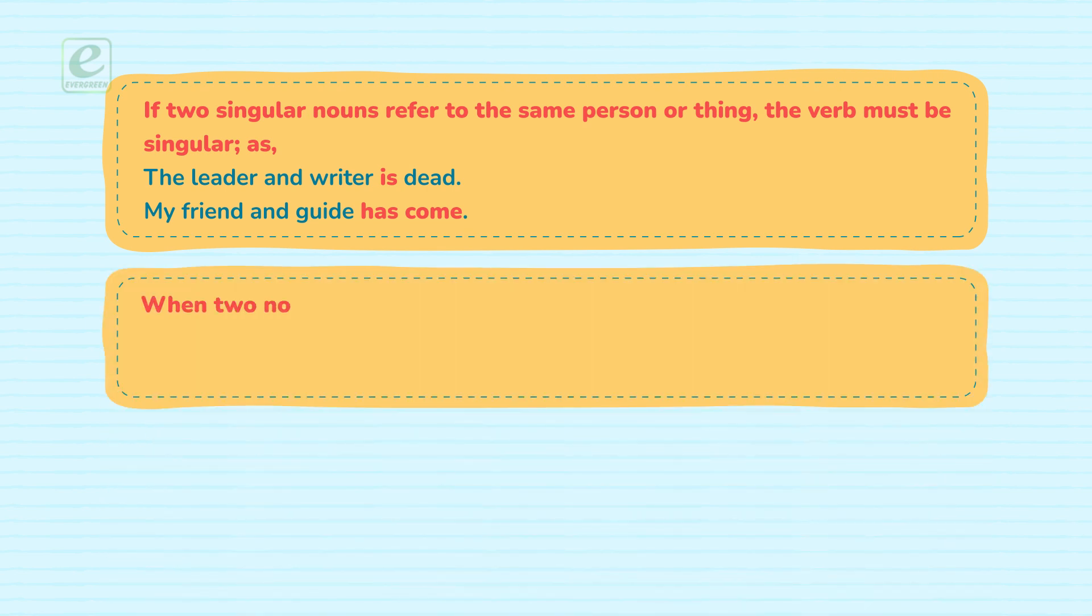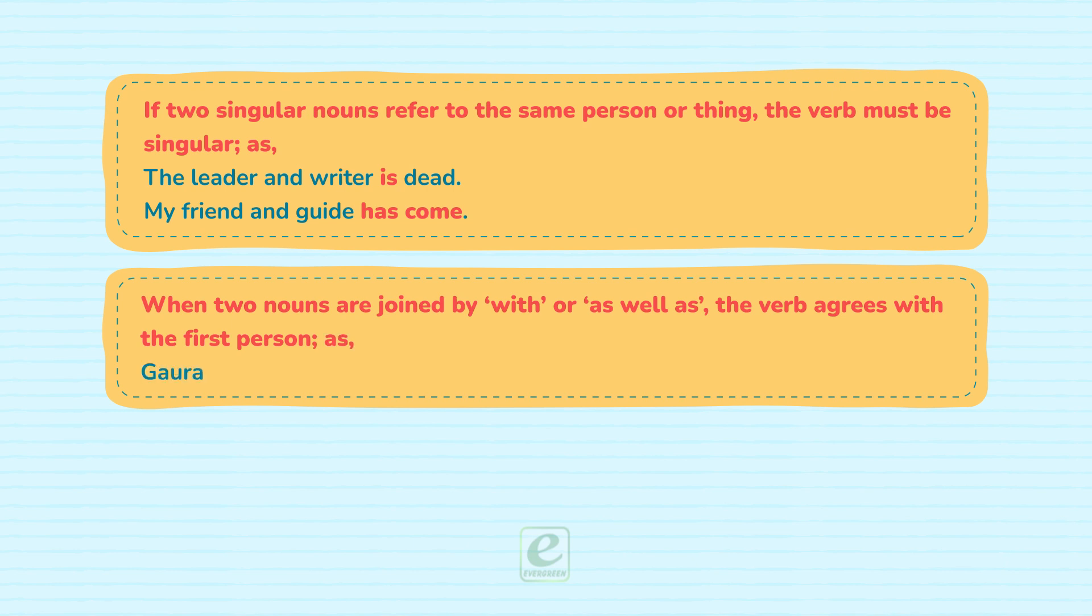When two nouns are joined by 'with' or 'as well as,' the verb agrees with the first person. For example: Gaurav with all his friends is here.